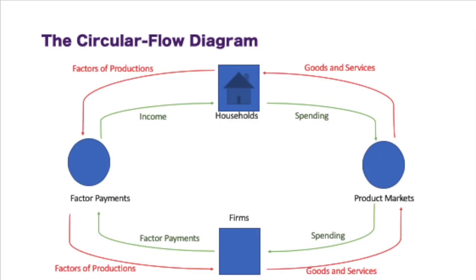Here we have a very simple circular flow diagram. We have two groups, which are the households and the firms. The inner circle is flowing in one direction, while the outer circle is flowing in a different direction, providing goods and services and factors of production on the outer circle. The inner circle is income and spending.